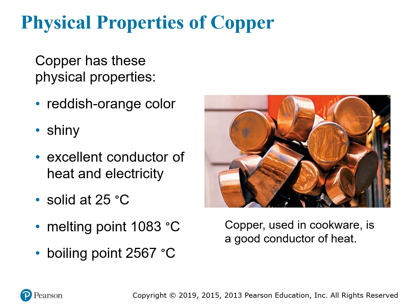As an example, here we have copper, and its physical properties include its distinct reddish-orange color, the fact that it's shiny, and that it reflects light in a certain way due to the electrons in copper atoms. For similar reasons, it conducts electricity and heat very well. It's solid at 25 degrees Celsius — about room temperature — and has a very high melting point. You'd have to heat it to over 1,000 degrees Celsius to melt it, and over 2,500 degrees Celsius to boil it. These are all physical properties of copper.